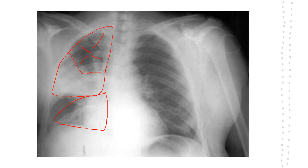Whether the lower lobe apical segment is affected or not can only be confirmed with a lateral chest X-ray. For all practical purposes, we will call this consolidation of the right upper lobe. With this image in mind, we will now see the corresponding findings you would get on inspection, palpation, percussion, and auscultation.